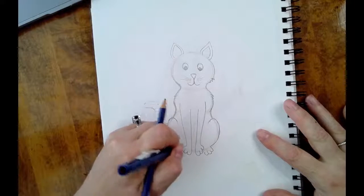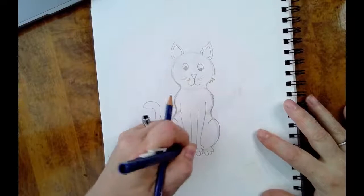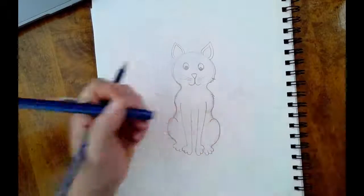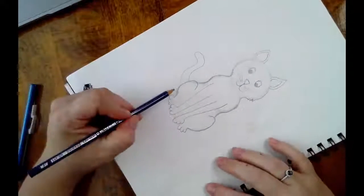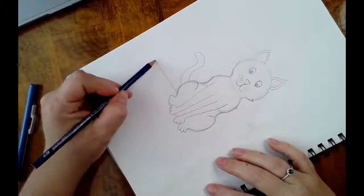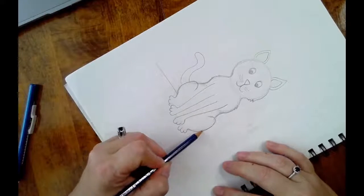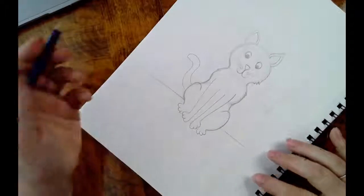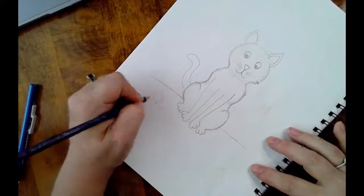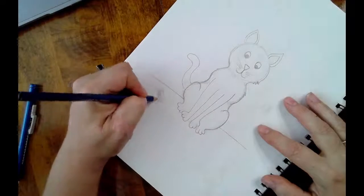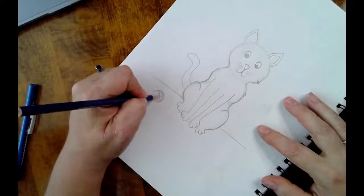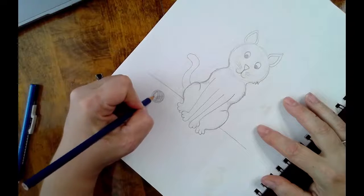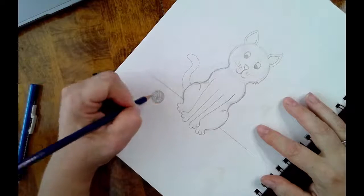And then I can go around and erase any lines that I don't need, just like that. And I can give him some background information, like maybe he's sitting on a table and maybe he's playing with a ball of yarn. Just like that.